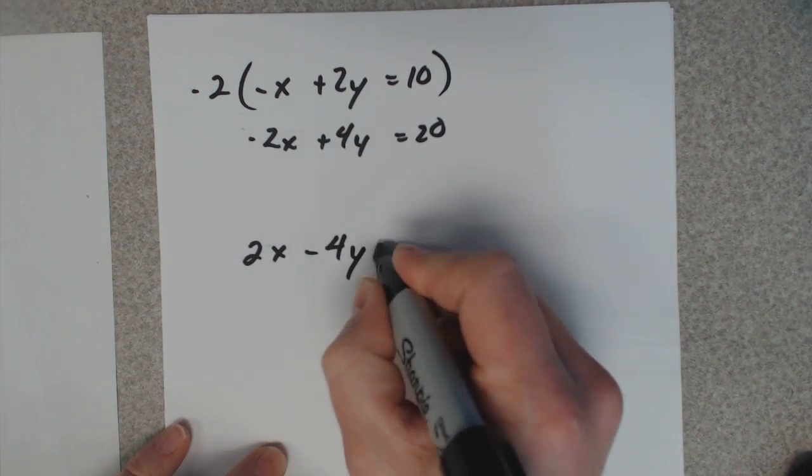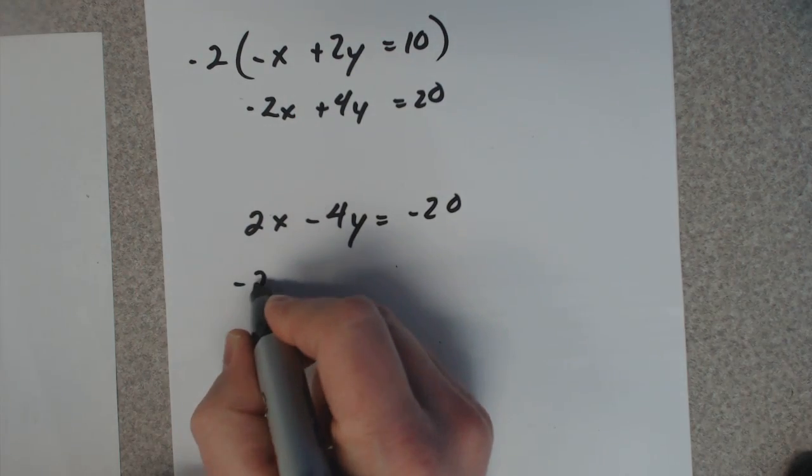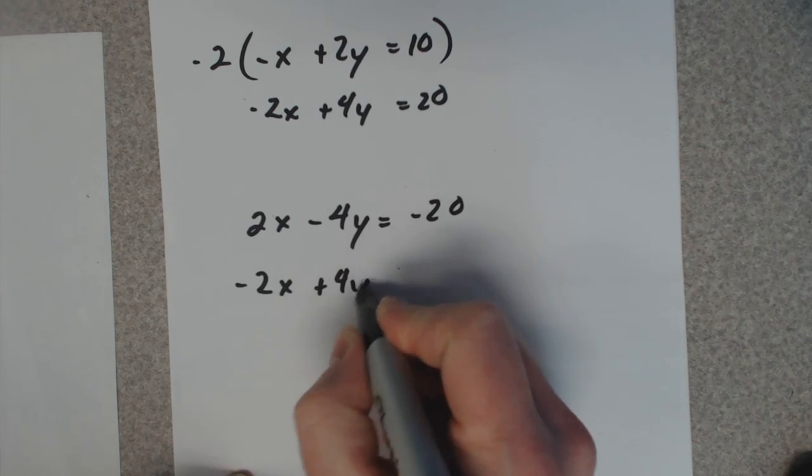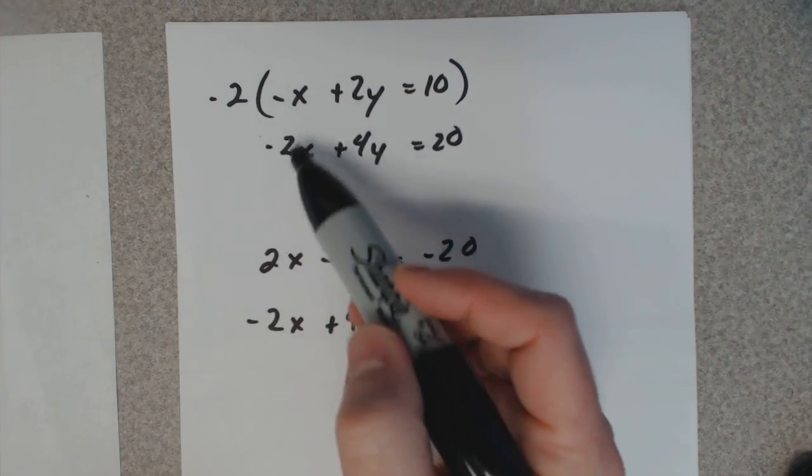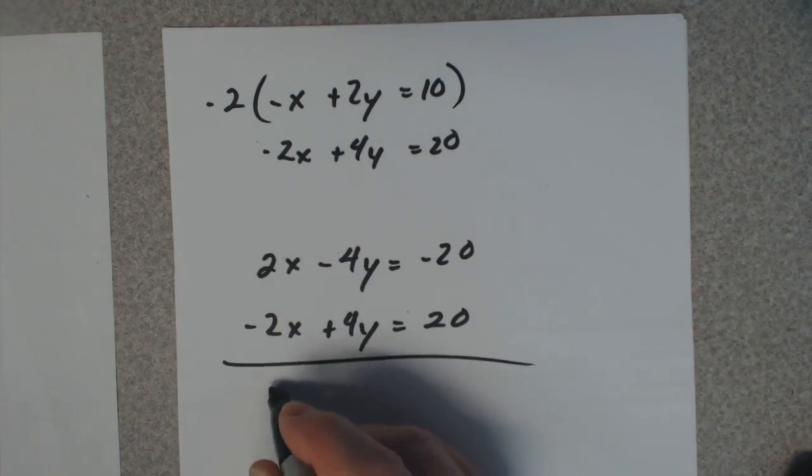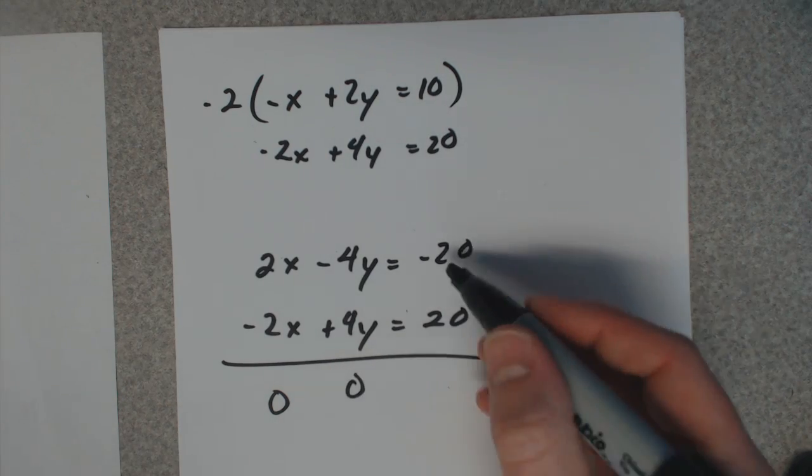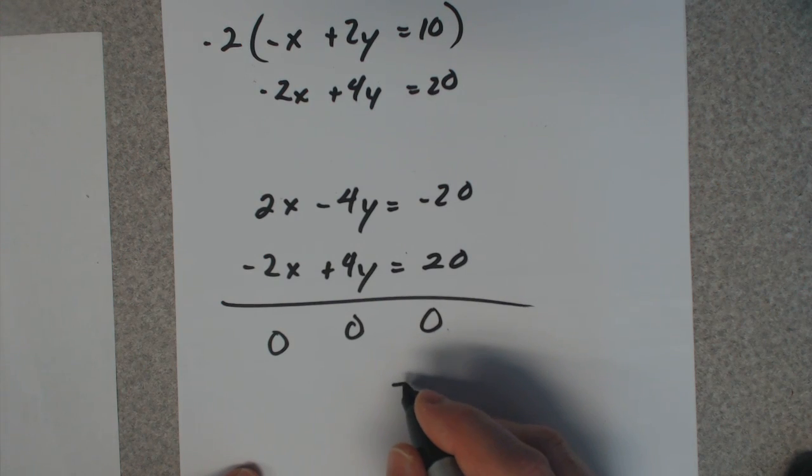2x minus 4y equals negative 20, that's my new top. The bottom is still 2x plus 4y equals 20. Now I did negative 2 because I wanted these to cancel. That cancels to 0, this cancels to 0, that cancels to 0. So if you get all 0's, it's infinitely many.